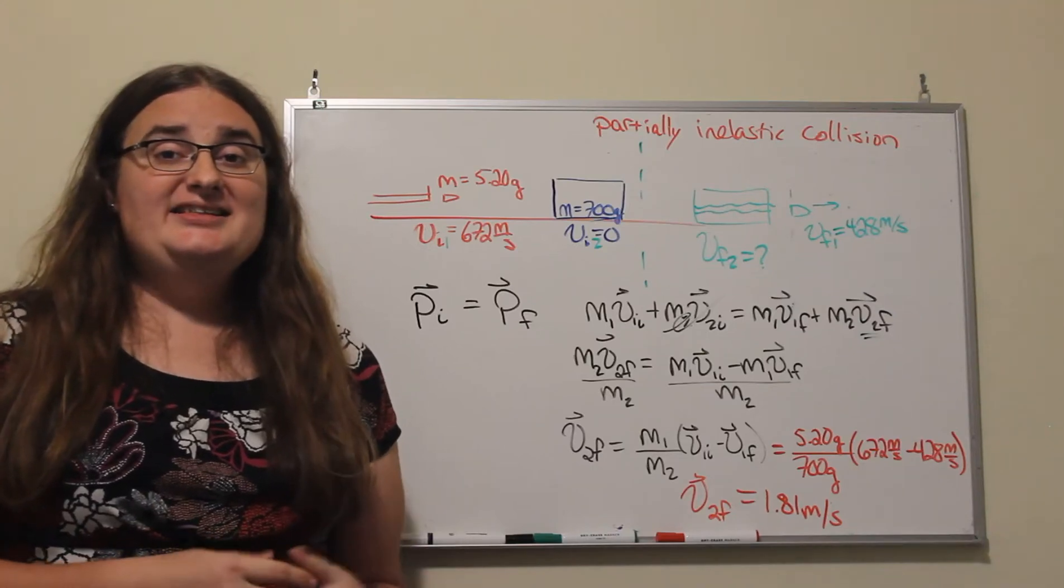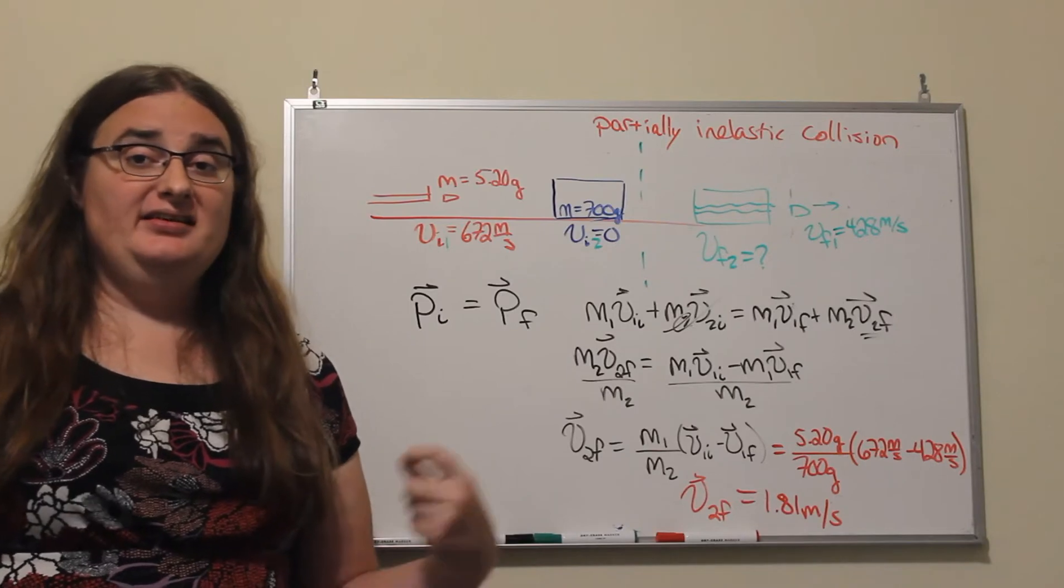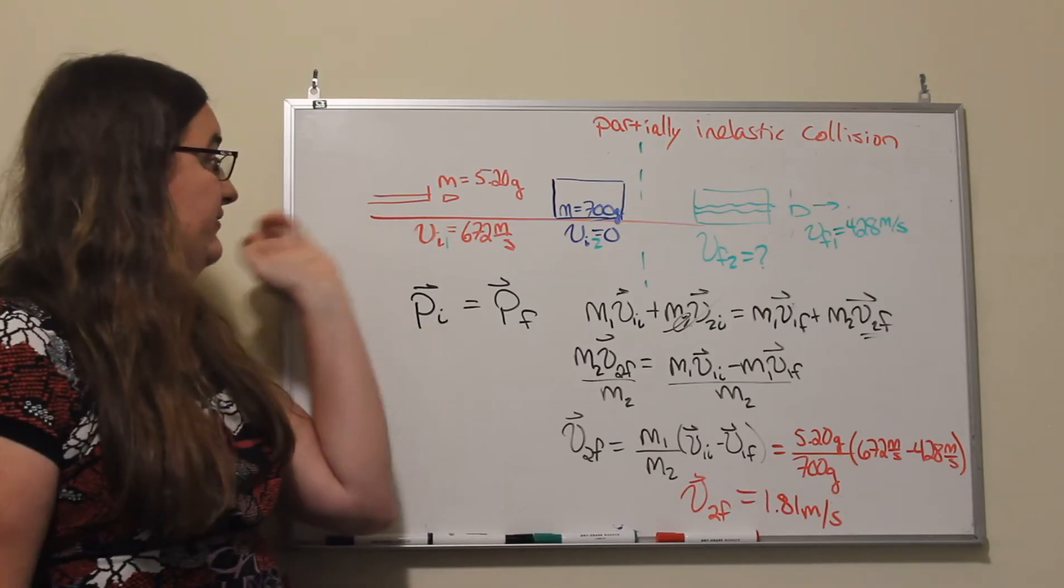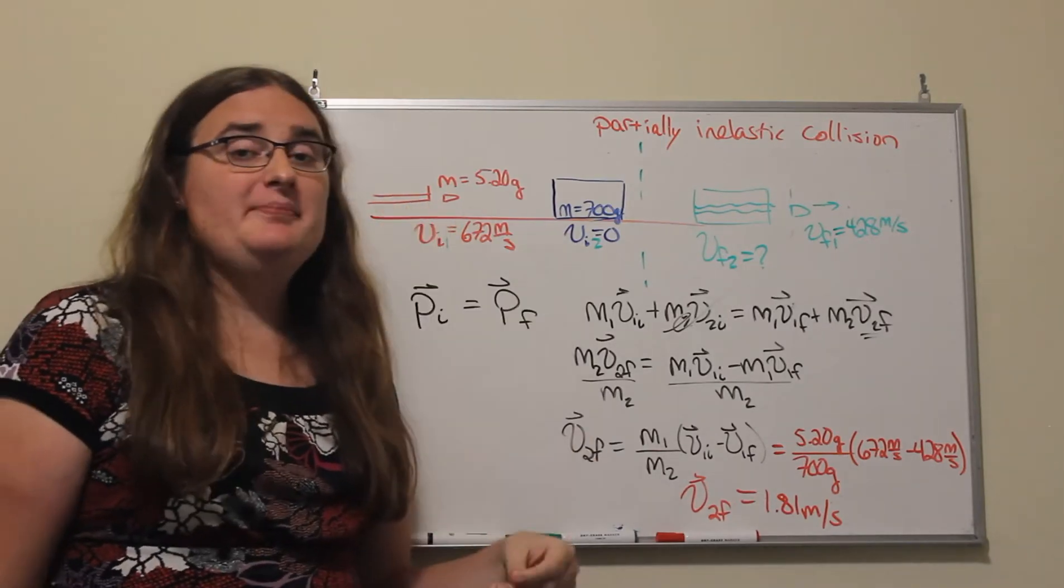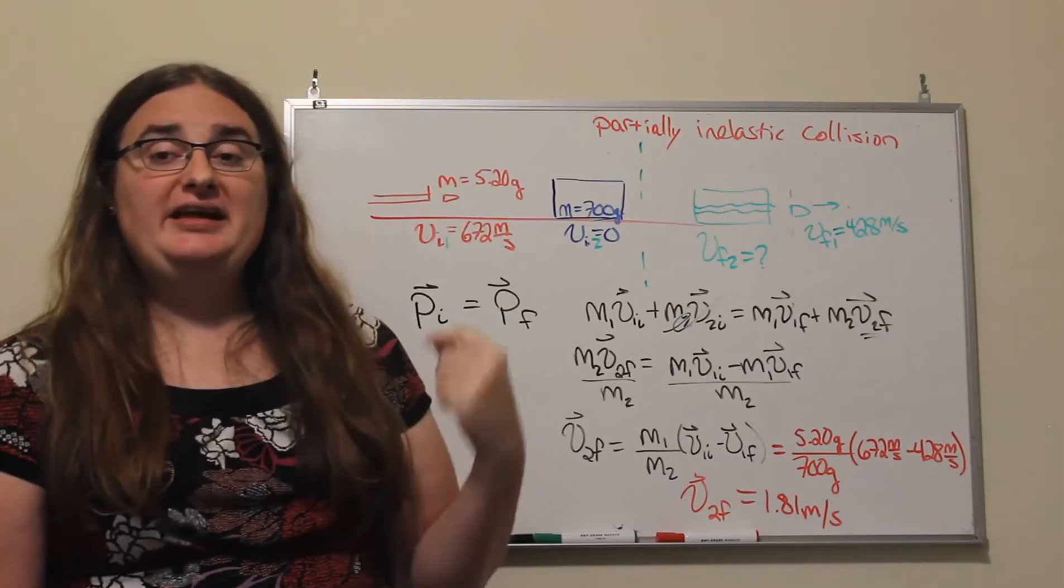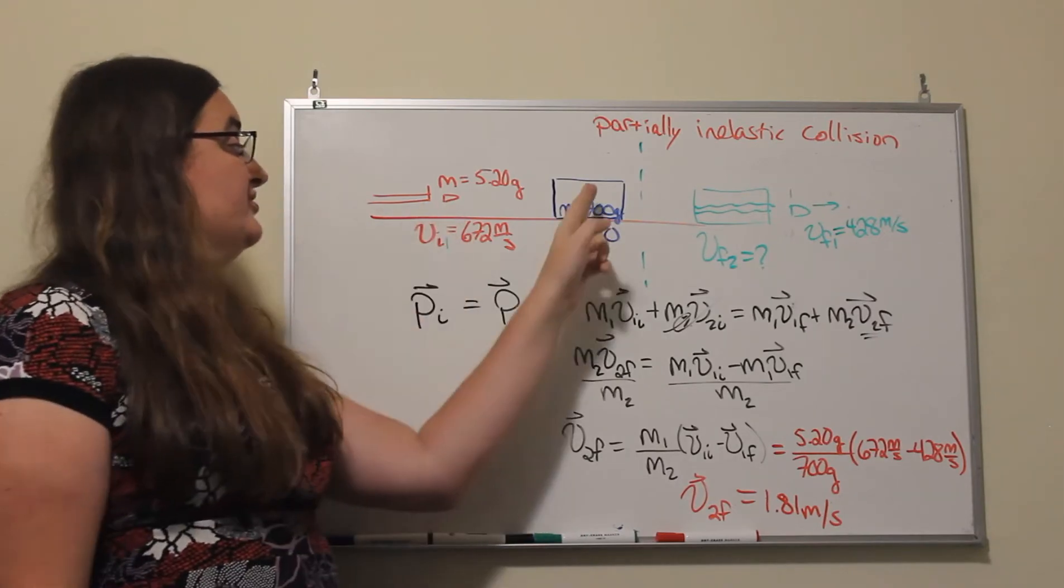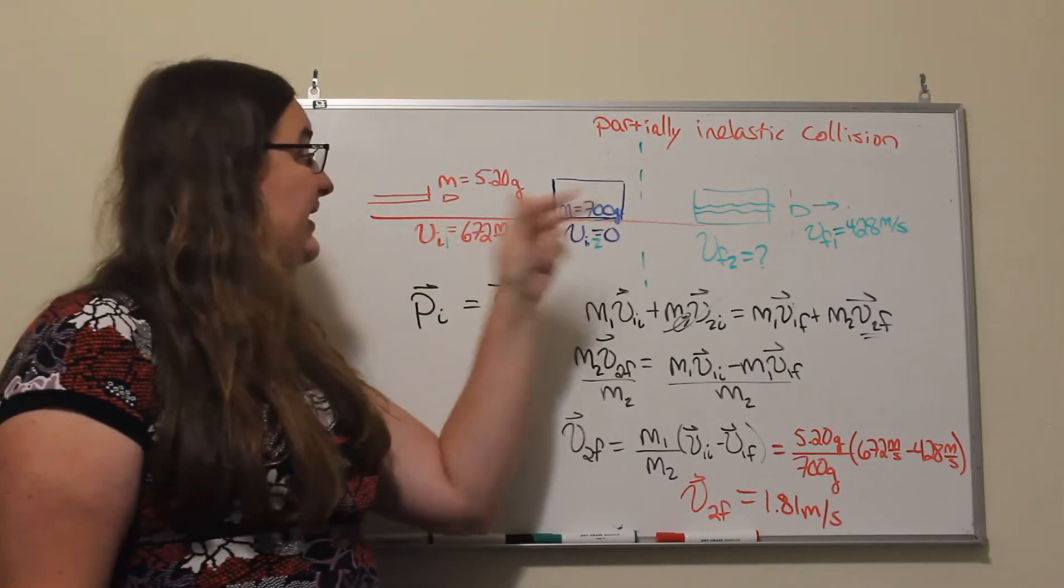Hi, let's take a look at an example of a partially inelastic collision. We have a projectile that has a mass of 5.2 grams and it starts traveling at 672 meters per second.